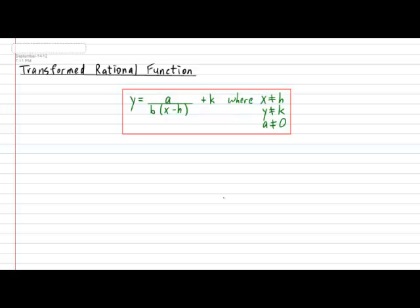The transformed rational function has a very unique format. It looks like the following: y equals a over b multiplied by x minus h plus k, where x is not allowed to be h, y is not allowed to be equal to k, and a is not allowed to be zero.